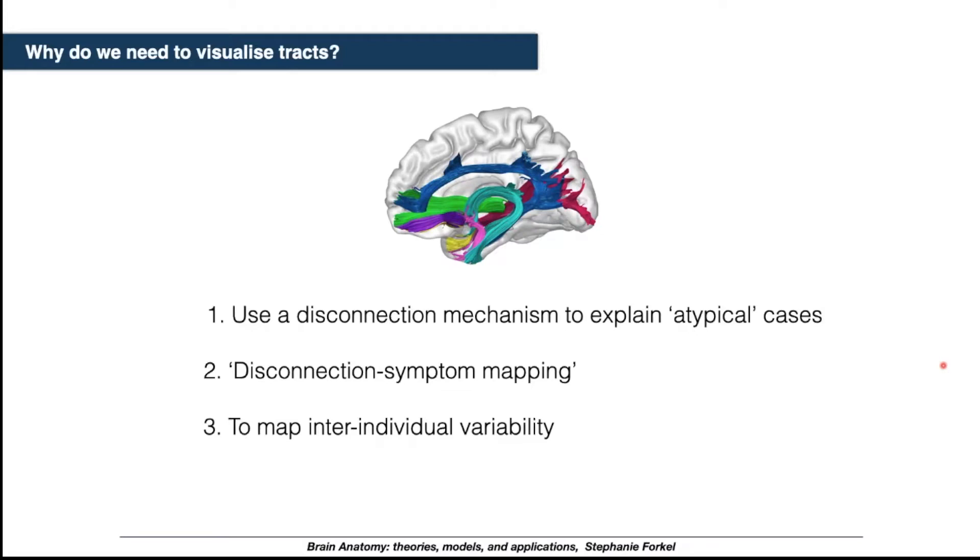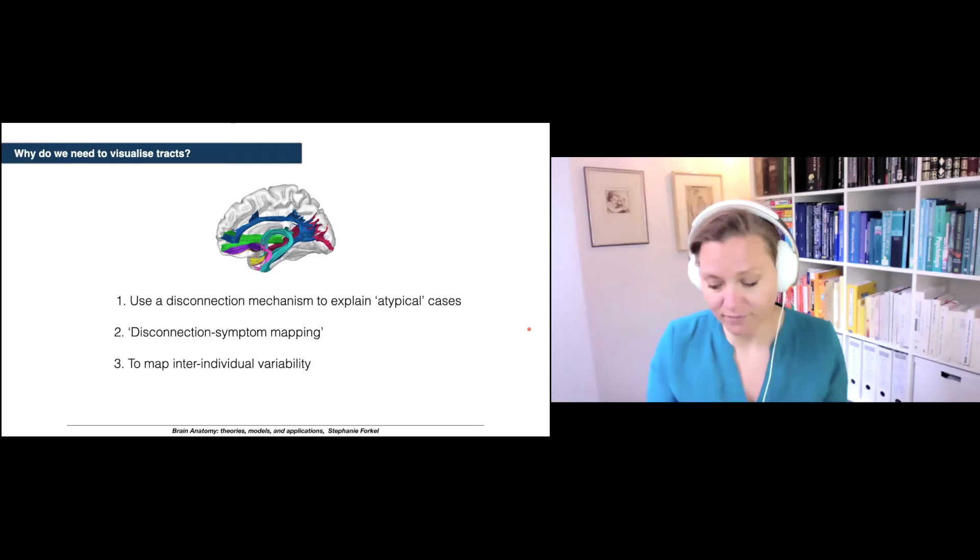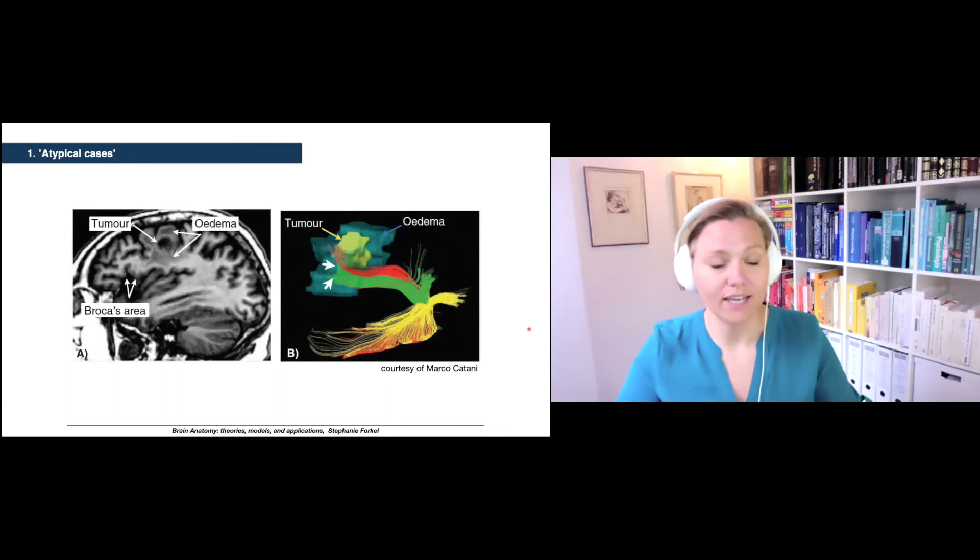Why do we need to visualize the tracts other than just putting a name to it? Here's three main reasons. The first one is that we can use it to explain atypical cases, and I'm going to come back to that in just a second, but it's basically patients who present with a clinical presentation that doesn't match what you would expect from classical lesion studies. We can use it to do disconnection symptom mapping, and you've seen a little bit of that in the first talk this morning. And my personal favorite, we can use it to map inter-individual variability.